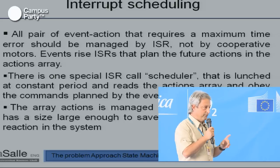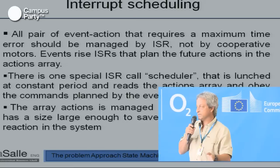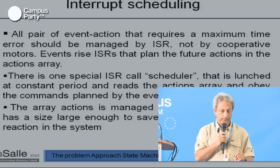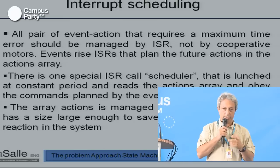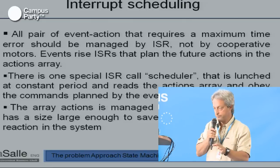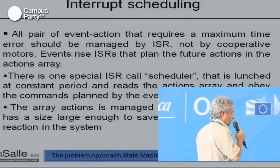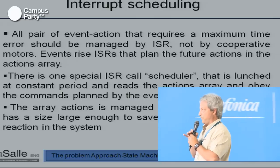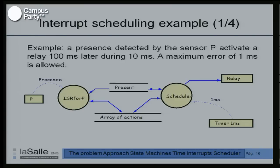We define a special interrupt service routine called a scheduler. The scheduler is launched at a constant period — for example, every one millisecond. It's a kind of dispatcher, but not the same. The scheduler is simple: it just looks at an array of actions and obeys the commands written in that array. The array of actions is managed as a circular buffer, large enough to save the maximum future time to be remembered.